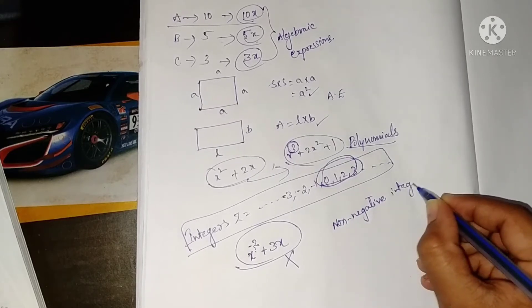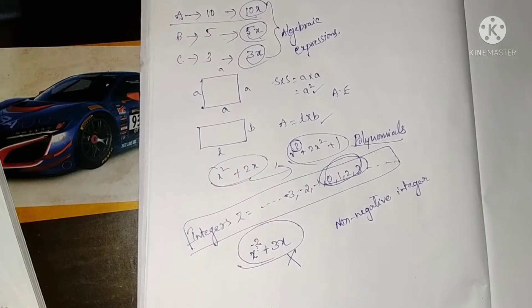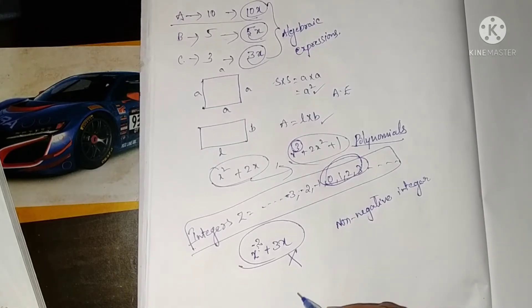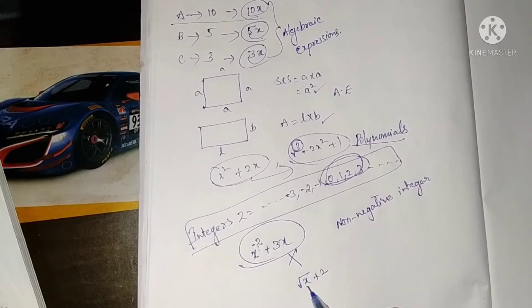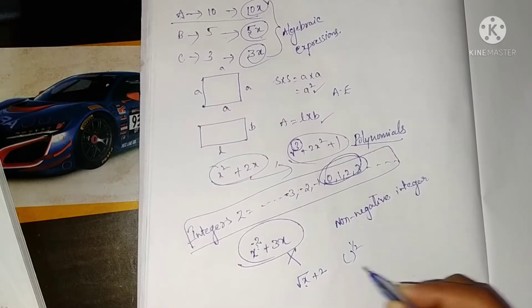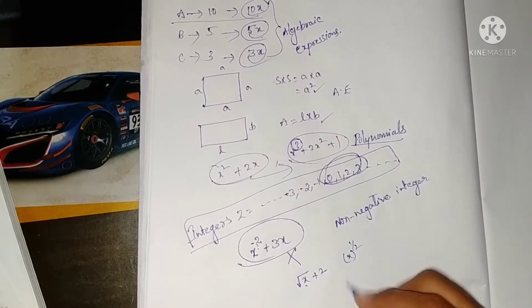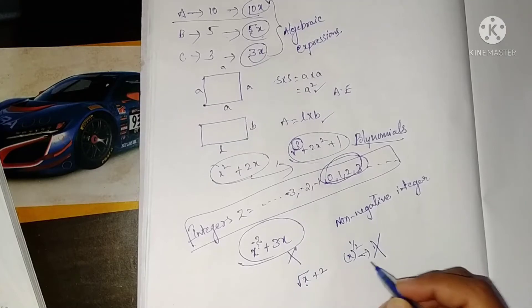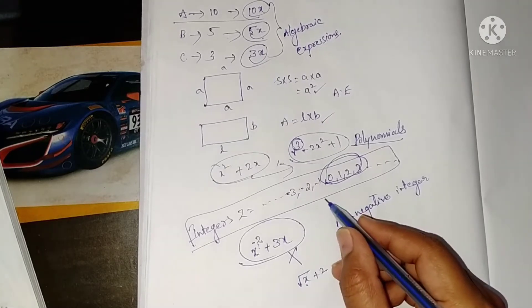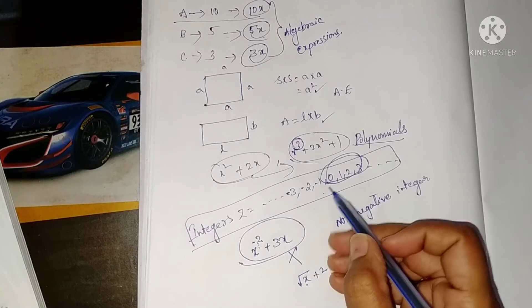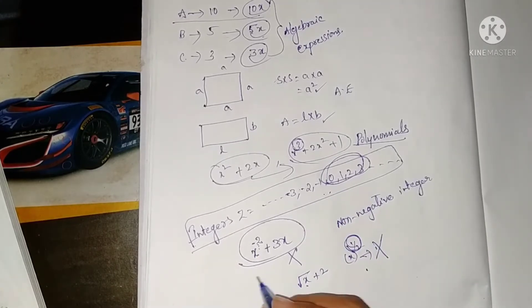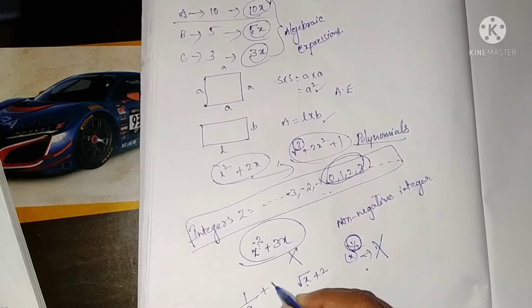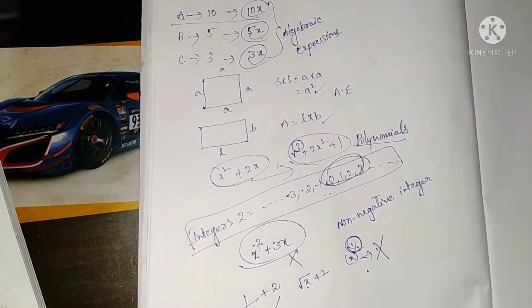Only then is it a polynomial, otherwise it is not. If I write √x + 2, the power of x here is 1/2, so x^(1/2) — this is also not a polynomial because the power is not an integer. And 1/x + 2 is also not a polynomial.